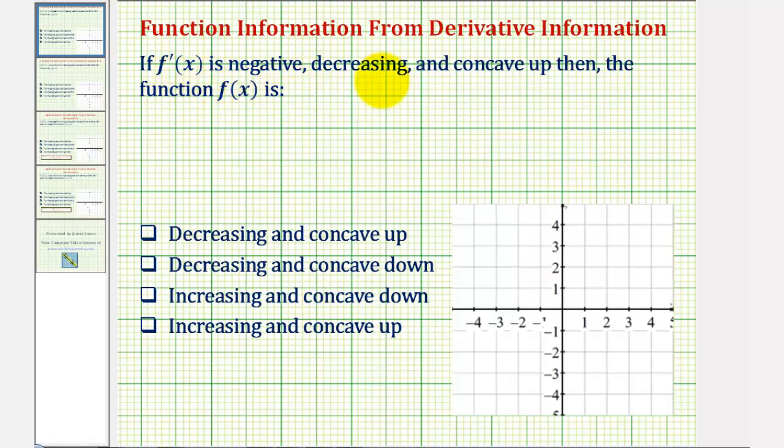If f prime of x is negative, decreasing, and concave up, then the function f of x is one of the following.